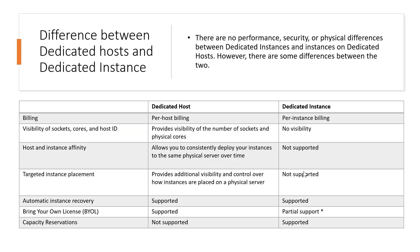Now let's go through the differences between dedicated host and dedicated instances. If you look at performance, security, or physical differences, there is no difference between a dedicated instance and an instance on a dedicated host. In both cases your EC2 instance runs on dedicated physical hardware which is only used by your account. So the difference starts from billing: a dedicated host is billed for the whole physical server, while for dedicated instances you have the option to pay on a per-instance basis.